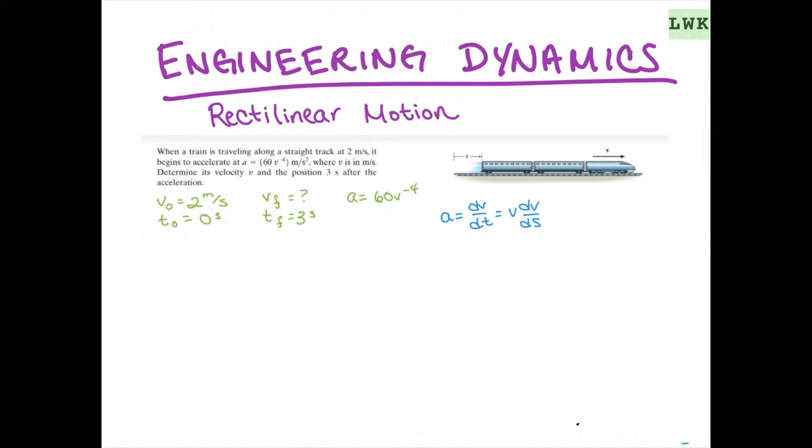So, let's get started. So, if a equals dv/dt, then we can also say that dt equals dv over a. And we can simplify this by writing 0 to 3 dt, which is our initial and final time right here. So, t0, and this is our tf. And that is going to equal 2 to vf, which is our v0 and our final v, of course, of 1 over (60 v to the negative 4). And this is just right here. This is just our a expression. We're just plugging in what we know, dv.